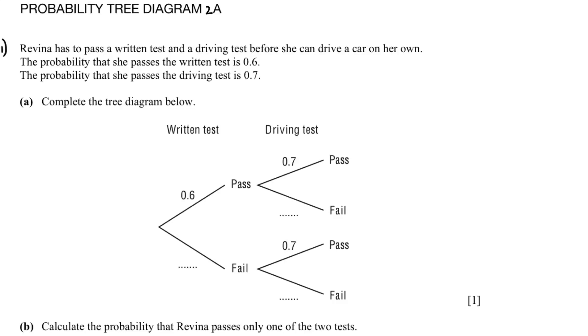Hi, in today's lesson we are going to solve probability tree diagram questions from IGCSE 0580 past papers. In question number one, Raveena has to pass a written test and a driving test before she can drive a car on her own. The probability that she passes the written test is 0.6 and the probability that she passes the driving test is 0.7. Complete the tree diagram below.